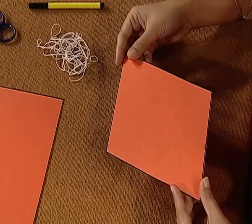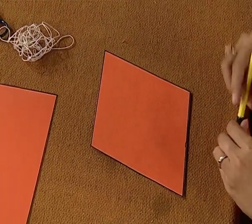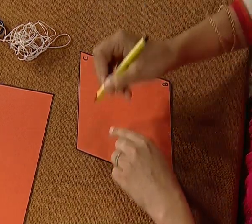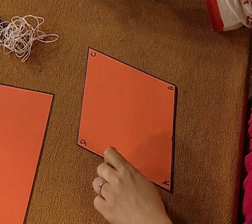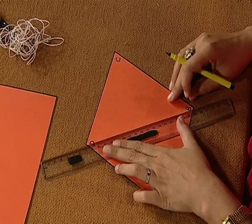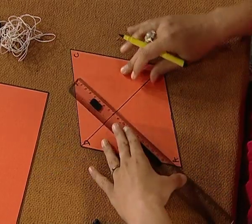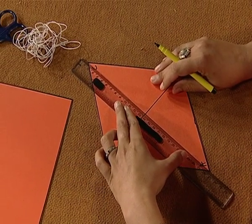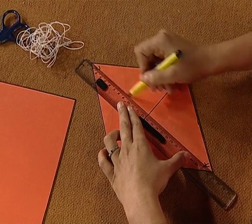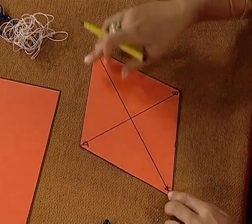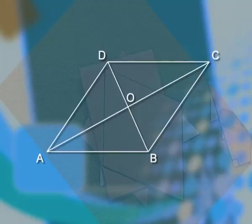We have a parallelogram with us. We will name this parallelogram as ABCD. First of all, we will draw diagonals. We will join the vertices B, D and A, C. BD and AC are the two diagonals of the parallelogram ABCD. The diagonals of a parallelogram intersect at a point O.